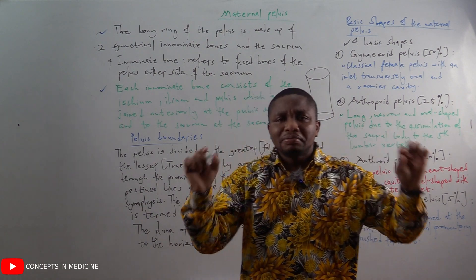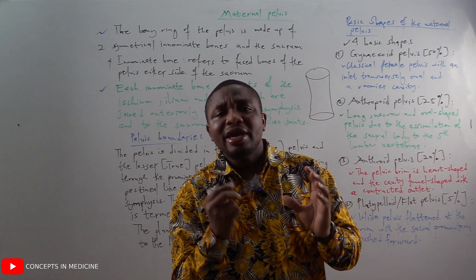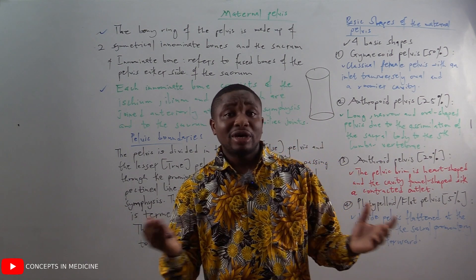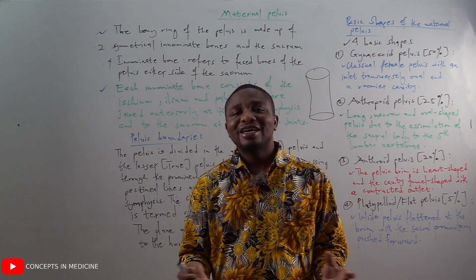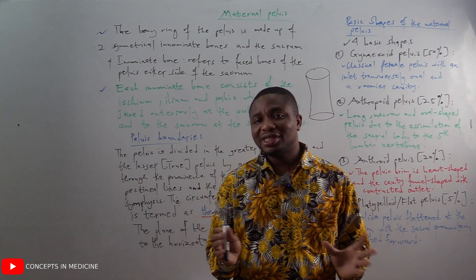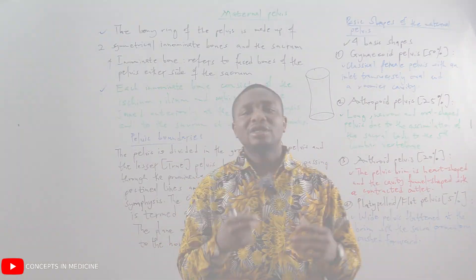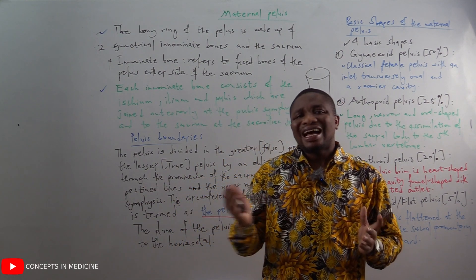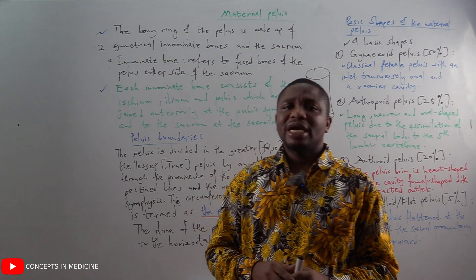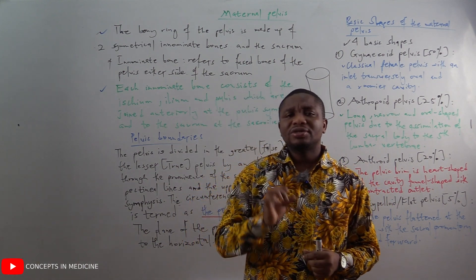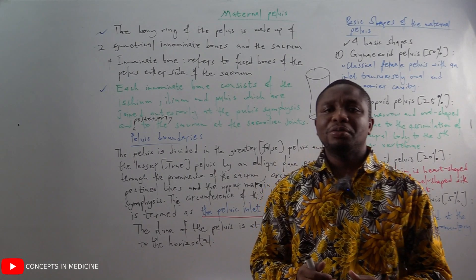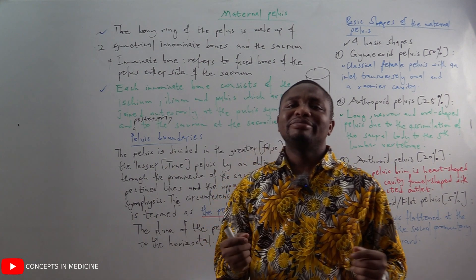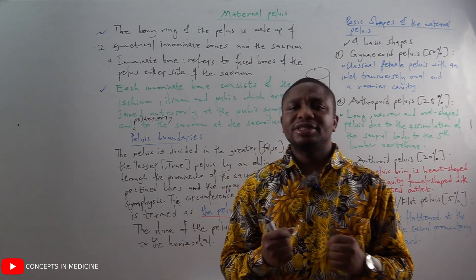The bony ring of the pelvis is made up of two symmetrical innominate bones and the sacrum. Innominate means fused — there is no motion. The innominate bone refers to the fused bones of the pelvis either side of the sacrum. Each innominate bone consists of the ischium, the ileum, and the pubis, which are joined anteriorly at the pubic symphysis.